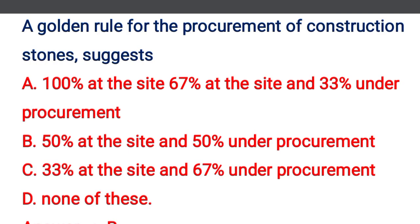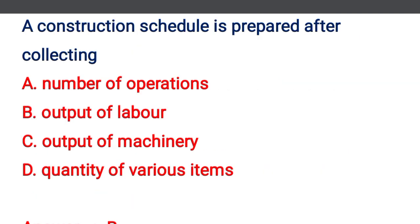Next question: a golden rule for the procurement of construction stone suggests — option A: 67% at the site and 33% under procurement, option B: 50% at the site and 50% under procurement, option C: 33% at the site and 67% under procurement, option D: none of the above. The correct answer is option B: 50% at the site and 50% under procurement.